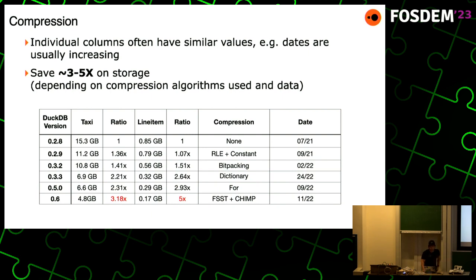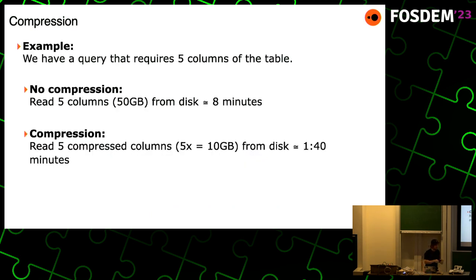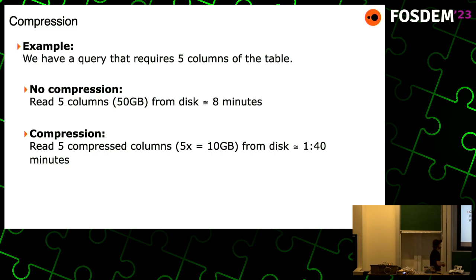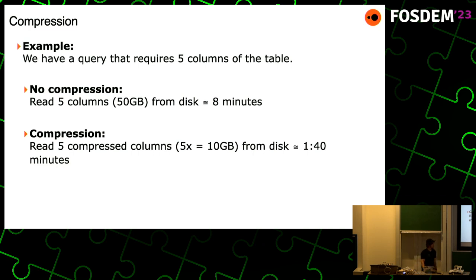Why is compression so important? Going back to our example of reading five columns from disk — it was costing eight minutes due to storage format savings. If we compress those columns, we don't have to read 50 gigabytes anymore. Applying the best case of five times compression, the cost reduces to about 1 minute and 40 seconds.